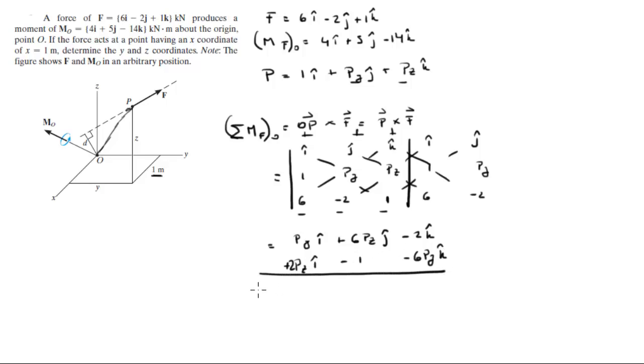So when you add this together you get Py plus 2Pz in the i, plus 6Pz minus 1 in the j, plus negative 6Py minus 2 in the k.